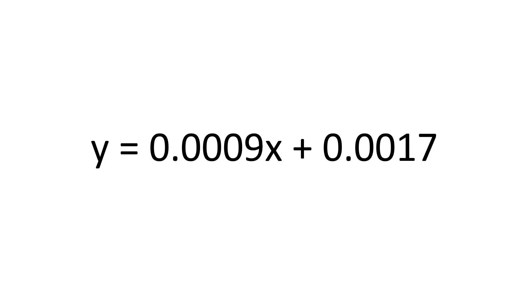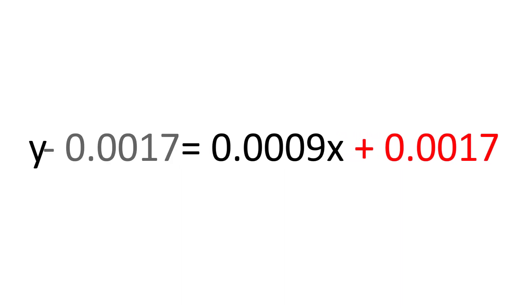First take the y intercept value, so my y intercept is plus 0.0017 and if you want to move this to the other side of the equation you simply perform the opposite action, which is to subtract 0.0017.